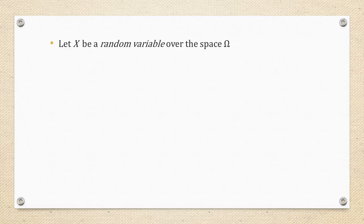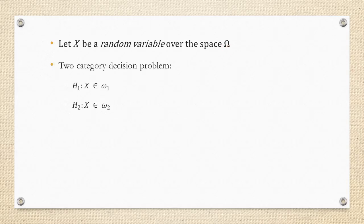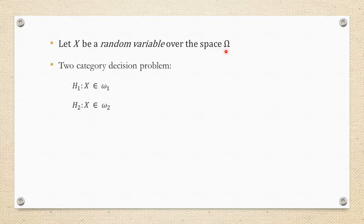Moving on to today's talk, we're interested in the optimality of Bayes' decision rule. We have a variable x — a random variable over some space omega — and we have a two-category decision problem. We want to choose hypothesis 1 when x falls in set omega 1, and hypothesis 2 when x falls in set omega 2. Sets omega 1 and omega 2 are a partition of capital omega, meaning x must fall in precisely one of these two sets.